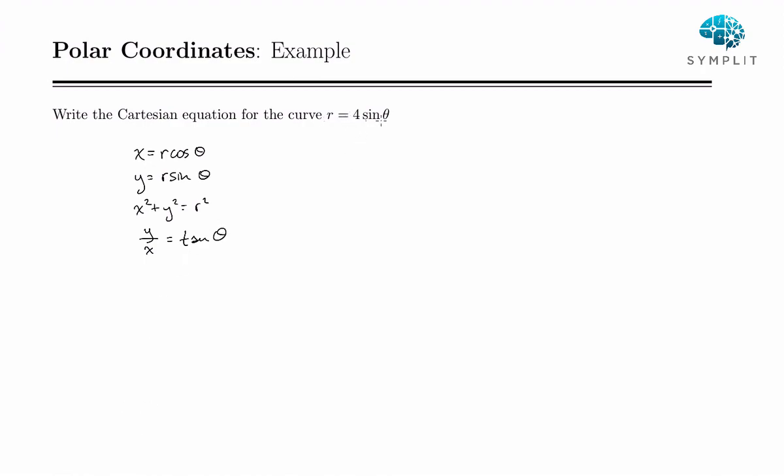So when we have an equation for a polar curve, we are looking for these four different things: r cosine theta, r sine theta, r squared, and tangent theta.